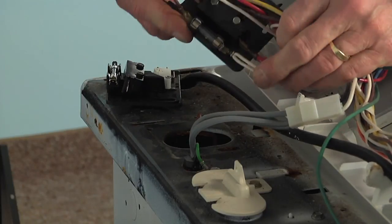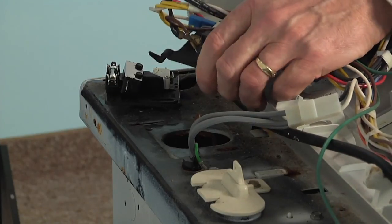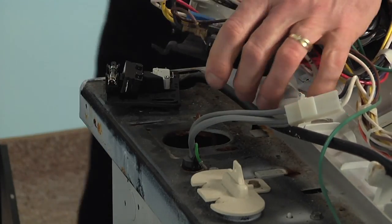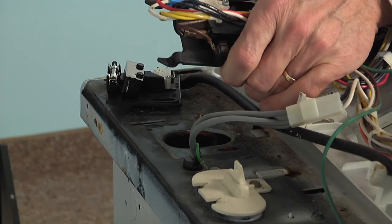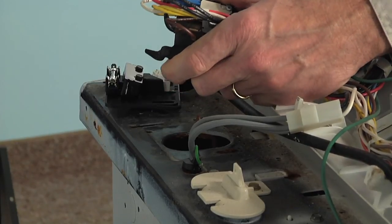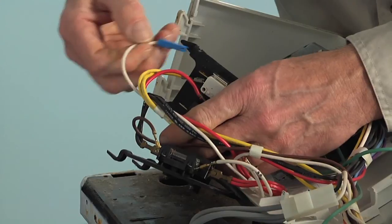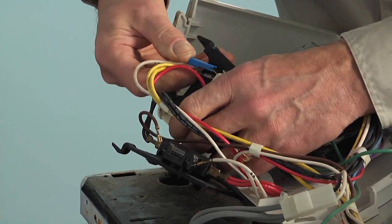Then we're simply going to exchange wire for wire, and if they're on there very snug, you can take a pair of needle-nose pliers and just gently pull those off. Make sure all of these wire connections are nice and tight.